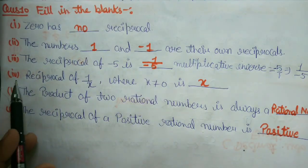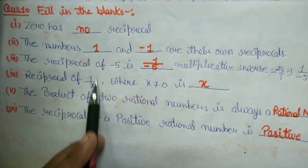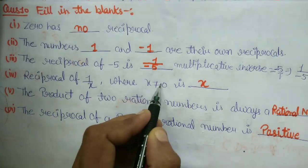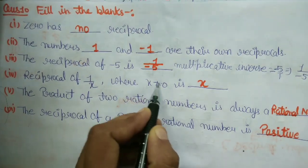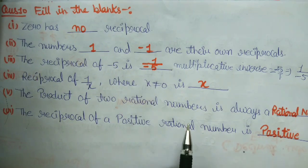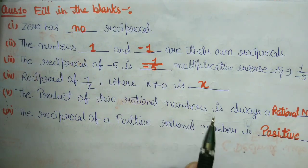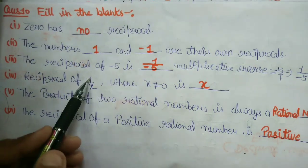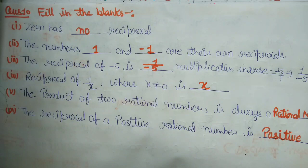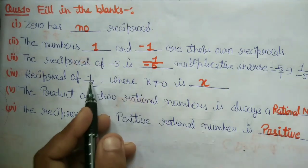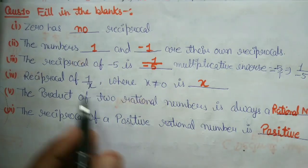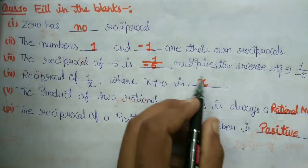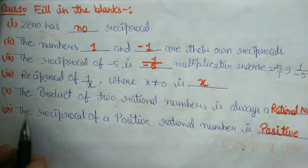Fourth: the reciprocal of 1 upon x, where x is not equal to zero. Toh humein iska reciprocal batana hai — x zero ke barabar nahi hoga. Yeh fraction form mein hai, iska reciprocal kya hoga? Multiplicative inverse x ho jayega — x upon 1, means x.